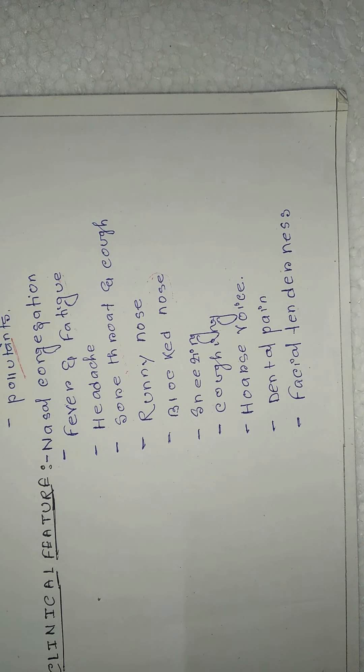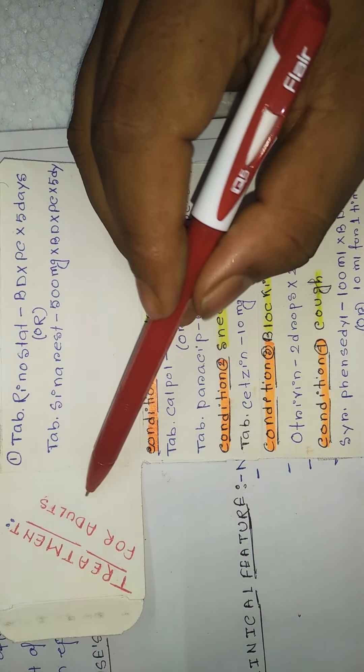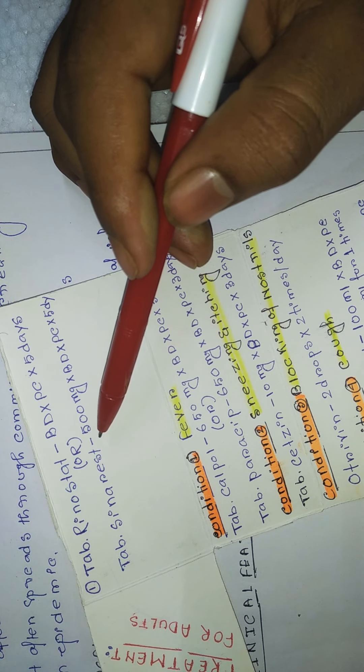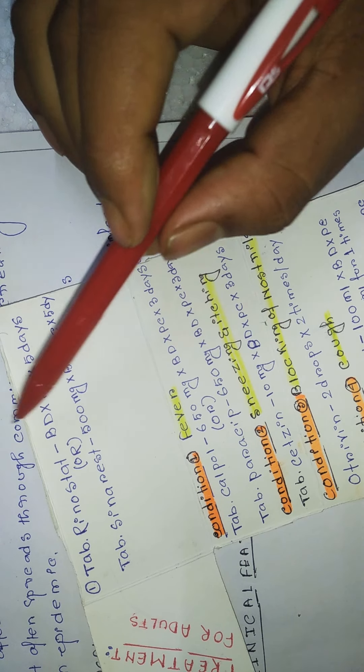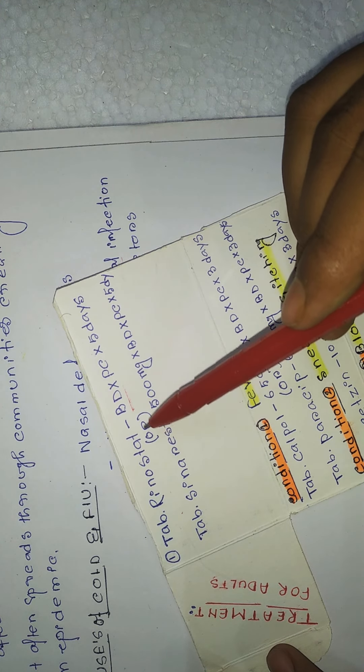Now I am going to focus on the treatment portion. This treatment is for adult patients associated with cold and flu. For information purposes, tablet Rhinostat BD — that is two times post-cibum, meaning after food — for five days. This tablet can be preferred for cold and flu.